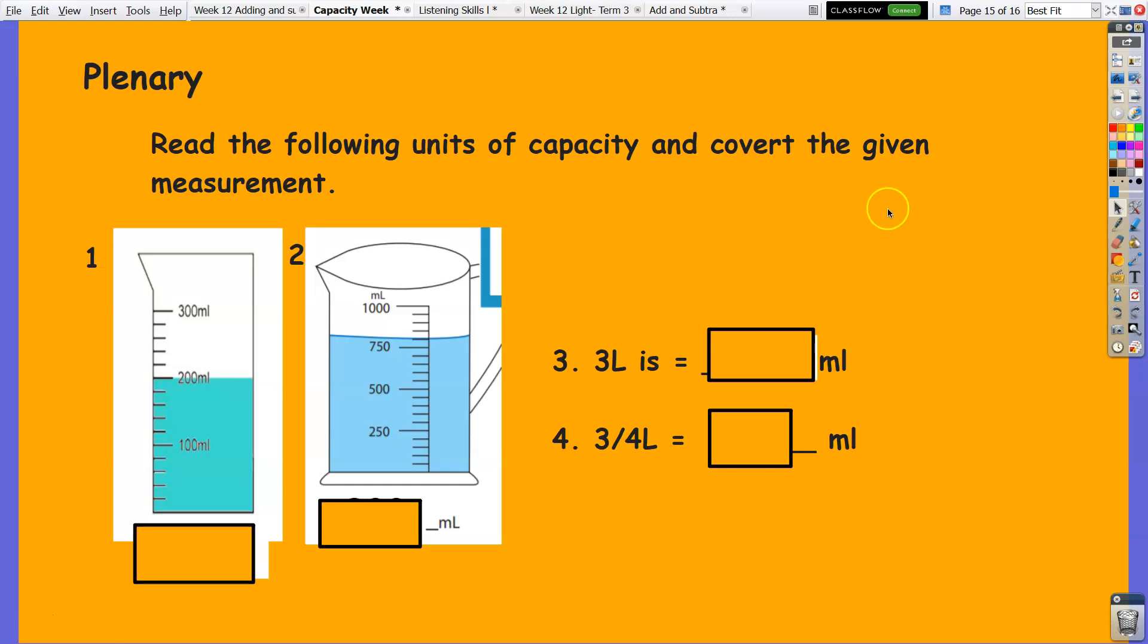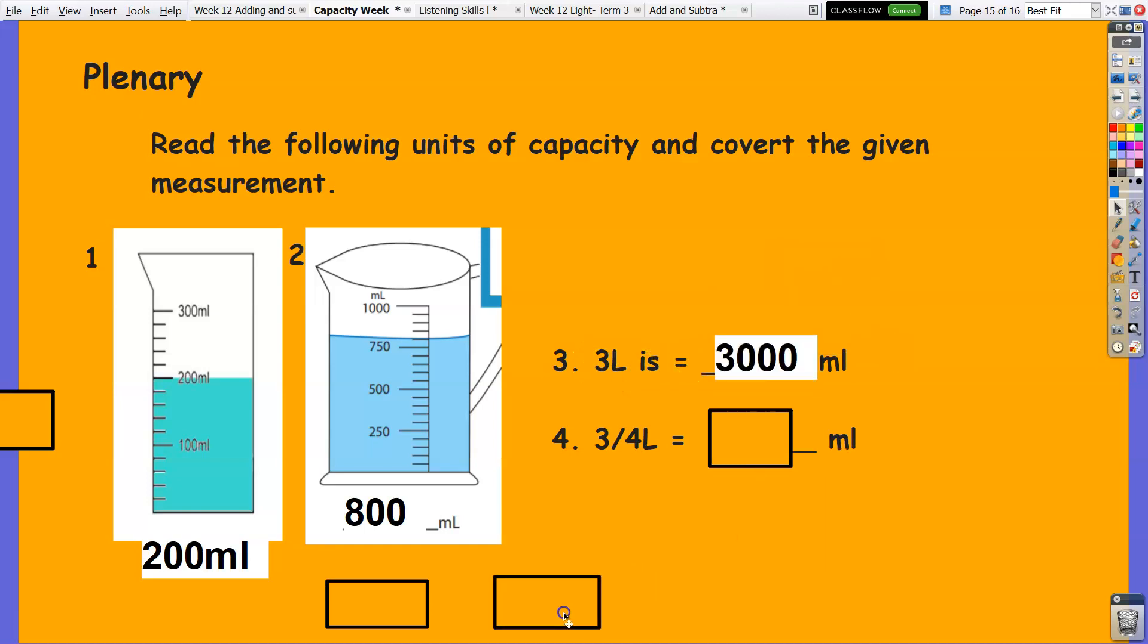All right, time is up. For first jar we have 200 ml. Second jar is 800 ml. Again we counted it by 50, so 250, 500, 750, the next is 800. 3 liters—add three zeros—that becomes 3000, and three-fourth liter is 750.